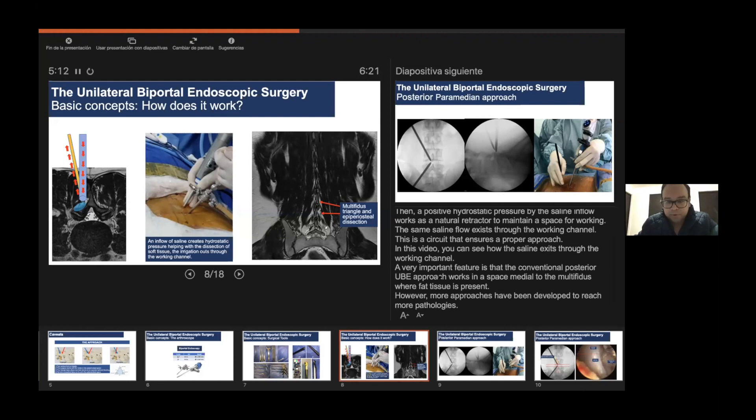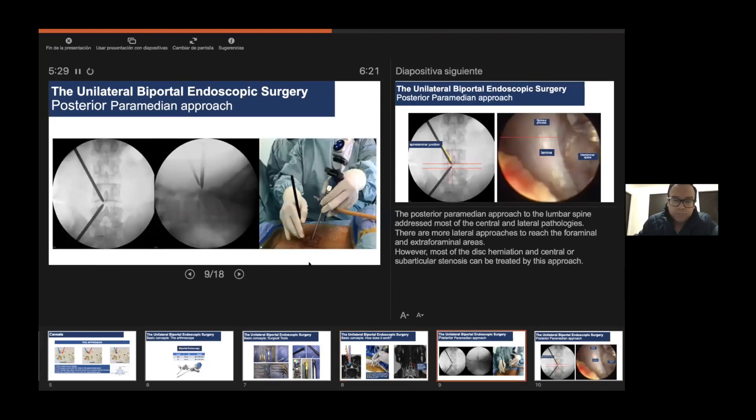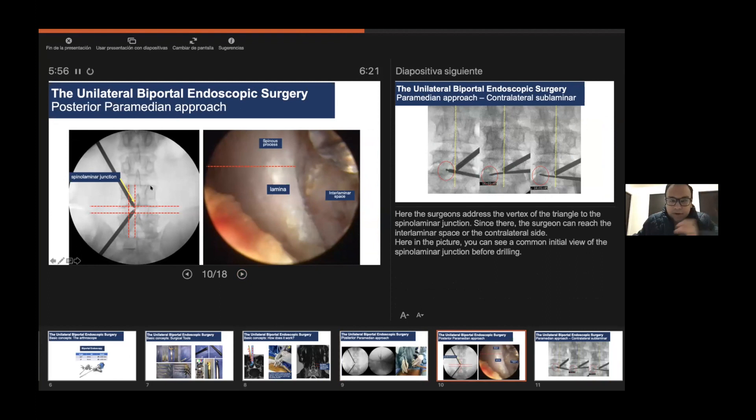Another important feature is that UBE technique is performed through posterior approaches. One of them is the paramedian approach. In the paramedian approach you work in a triangle. This space is medial to the multifidus muscle. Here you can approach the spine with minimal muscle damage. Here is the epiperiosteal space. The posterior paramedian approach to the lumbar spine addresses most of the central lateral pathologies. There are more lateral approaches to reach the foraminal area or extraforaminal approach called the paraspinal approach.